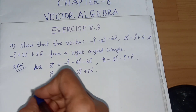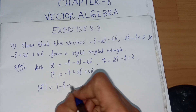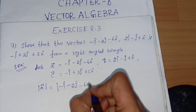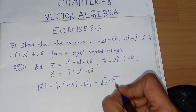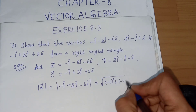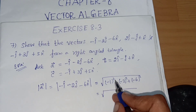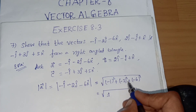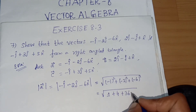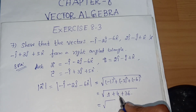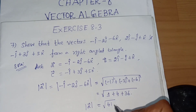The magnitude of a vector: |a| = √((-1)² + (-2)² + (-6)²) = √(1 + 4 + 36) = √41. So the magnitude of a vector is √41.